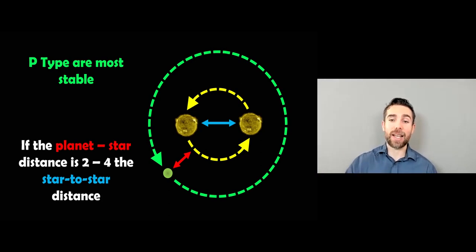And generally, if that planet-star distance is two to four times the star-star distance, then they can be considered stable. So in this configuration, you really want the planet quite a way out from the two stars so they're not being gravitationally disturbed as those stars orbit each other.